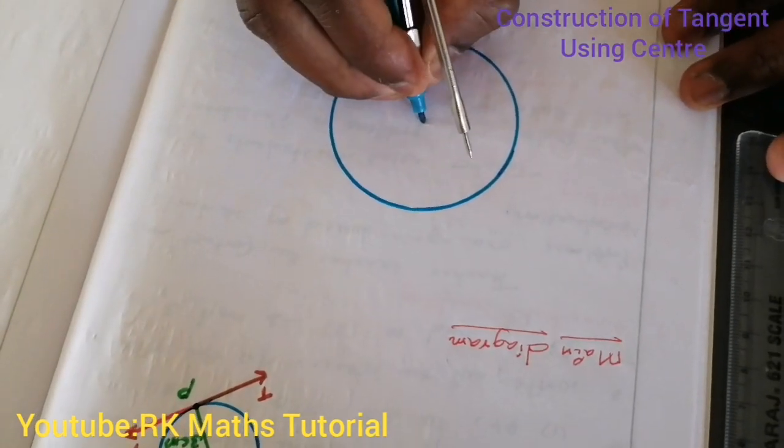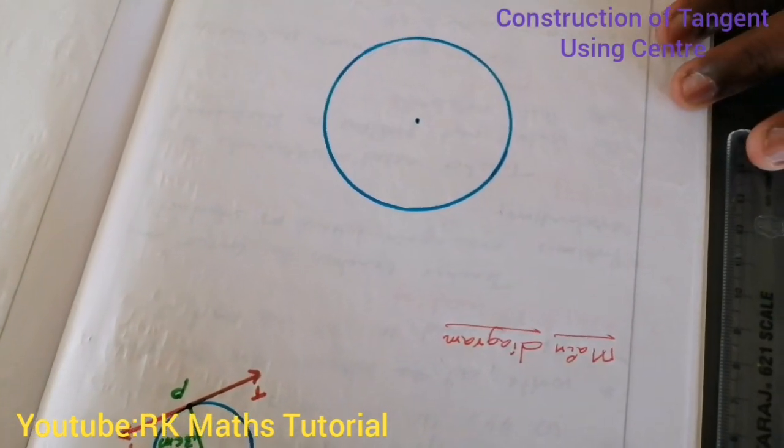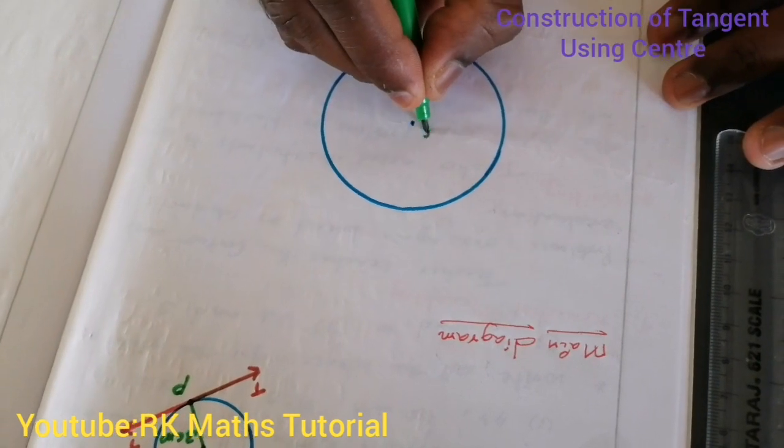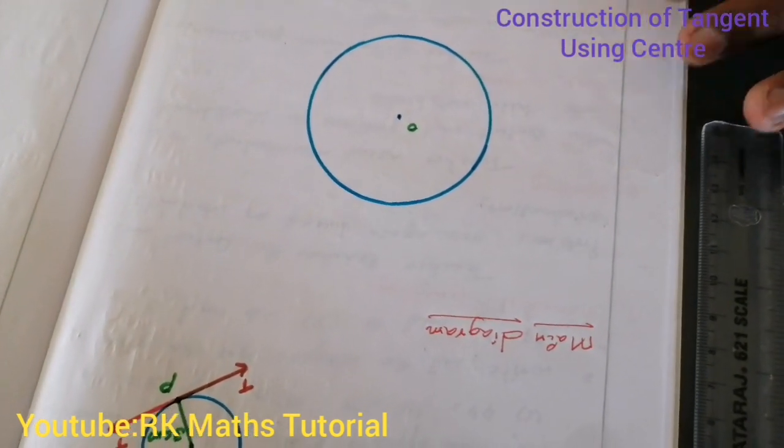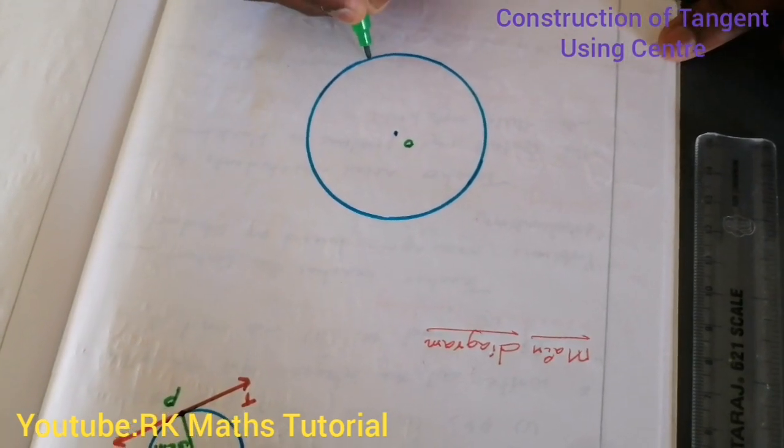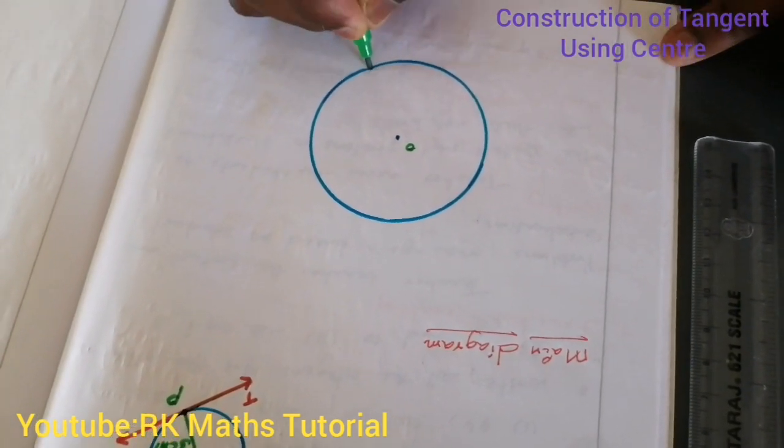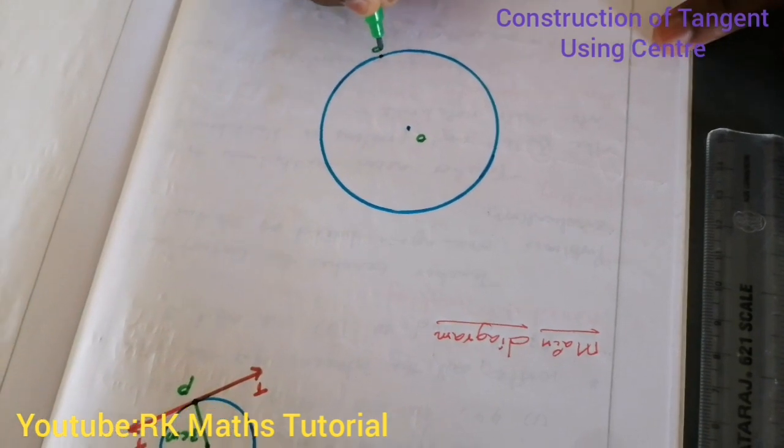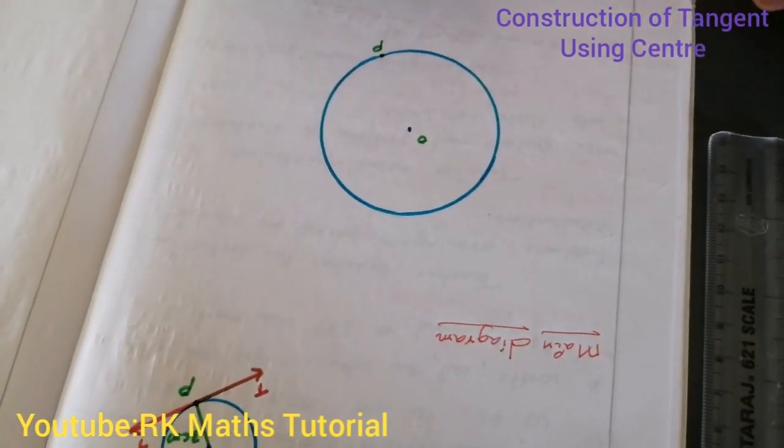So, here is the center point. Center point O. Okay, now we are going to draw a circle. So here is the center point. This line is going here.